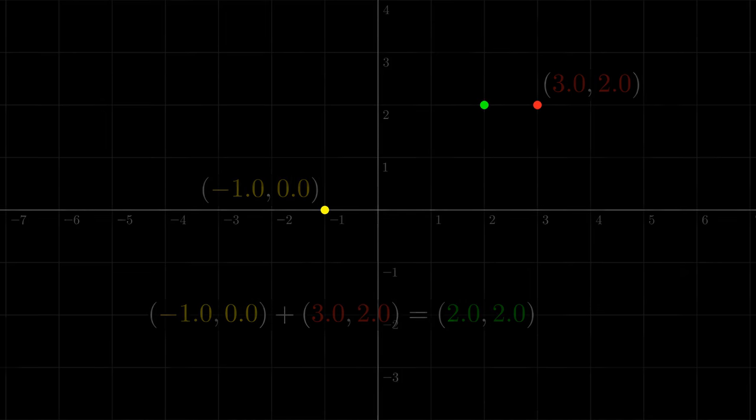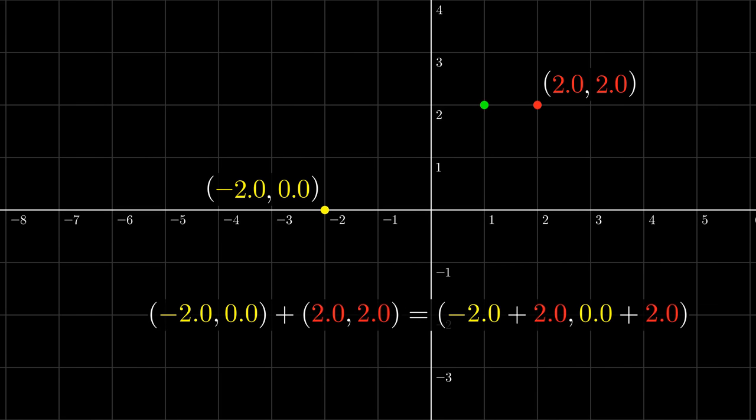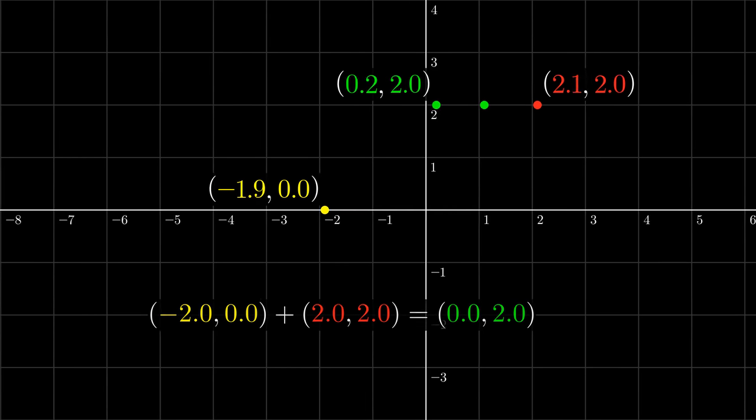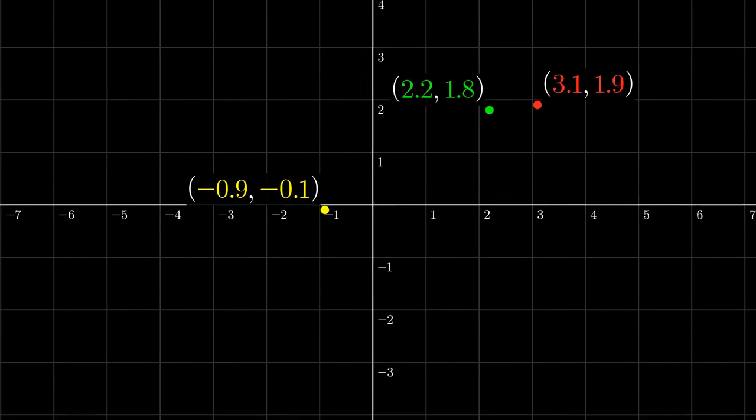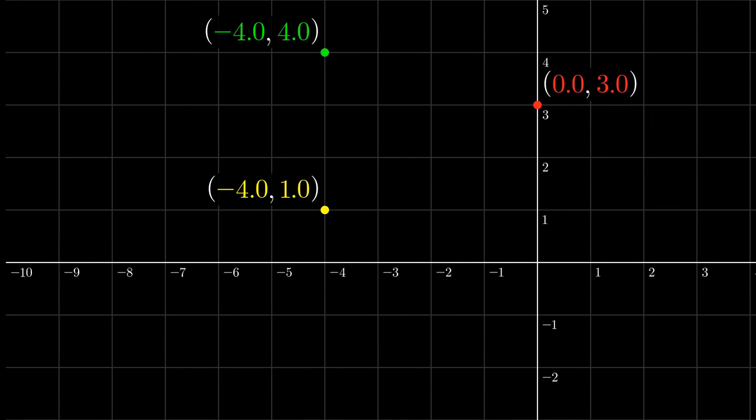However, there's an issue with doing this. What if we drew our axes here instead? Then the coordinates of these two points are (-2, -1) and (1, 1), and when we add them by adding the corresponding coordinates again, we get (-1, 0). When we plot this point, we see that it is a different point than what we got before. In general, we see that as we move the axes around, while our starting points don't move, the result of adding the coordinates of the two points does move.